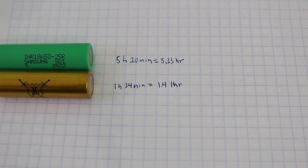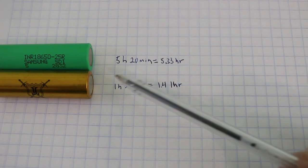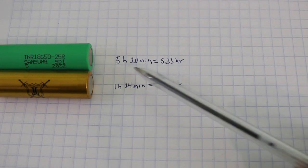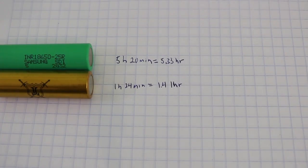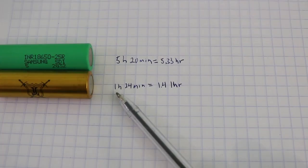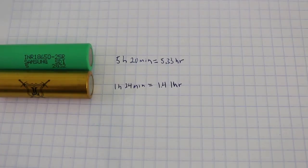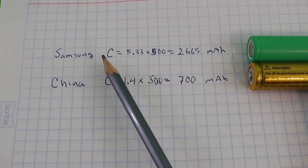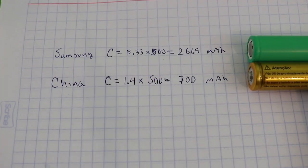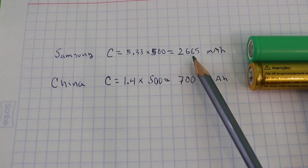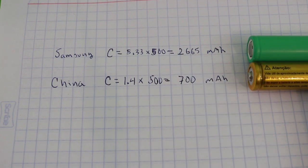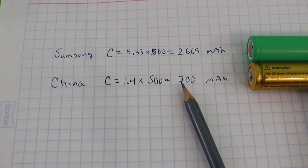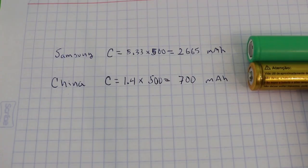So here's what we got from our tests. The Samsung battery had a time of 5 hours 20 minutes or 5.33 hours, and the Chinese battery lasted only 1 hour 24 minutes or 1.5 hours with a current draw of 500 milliamps. And here we have the capacities. For the Samsung battery the capacity is 5.33 times 500, that is 2665 milliamp hours. And for the Chinese battery we have only 700 milliamp hours, very different from the 8800 that it is supposed to be.